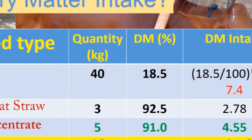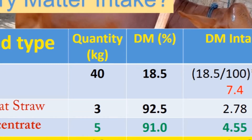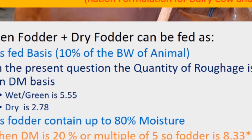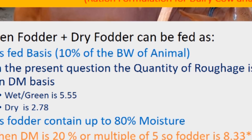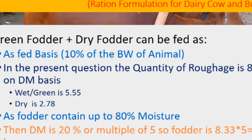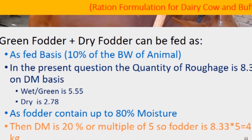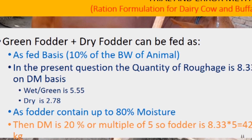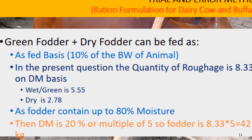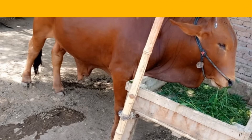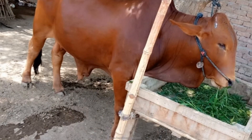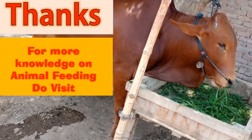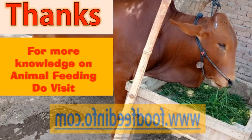These guidelines have also been discussed in ration formulation videos. As a quick rule, you can estimate green fodder intake simply as 10% of the animal's body weight on a fresh basis. If you have any comments or suggestions, you can ask in the comments or visit the website to ask a question. Thank you for watching.